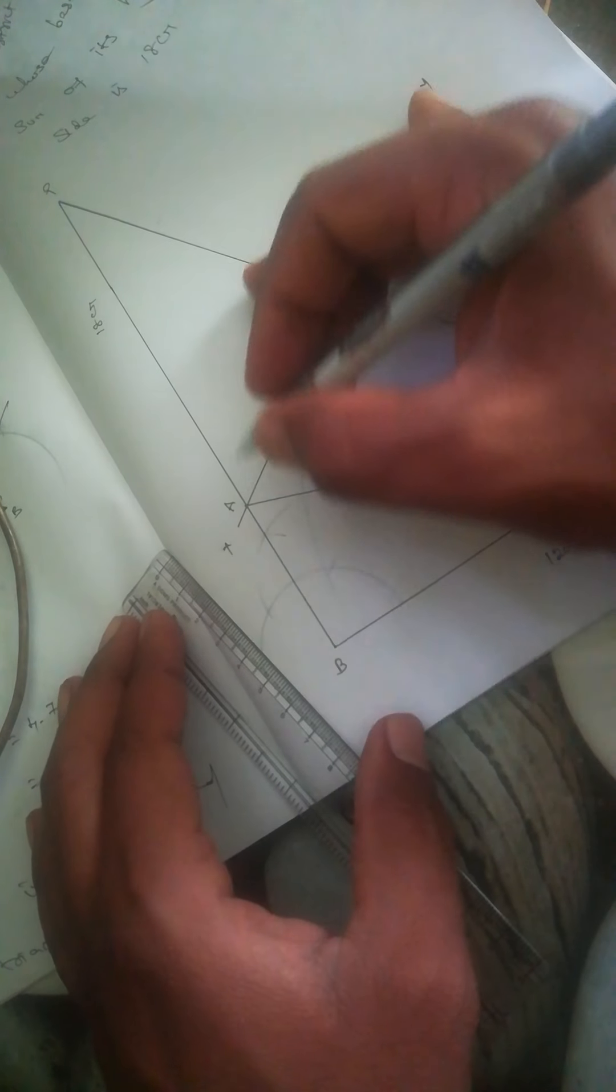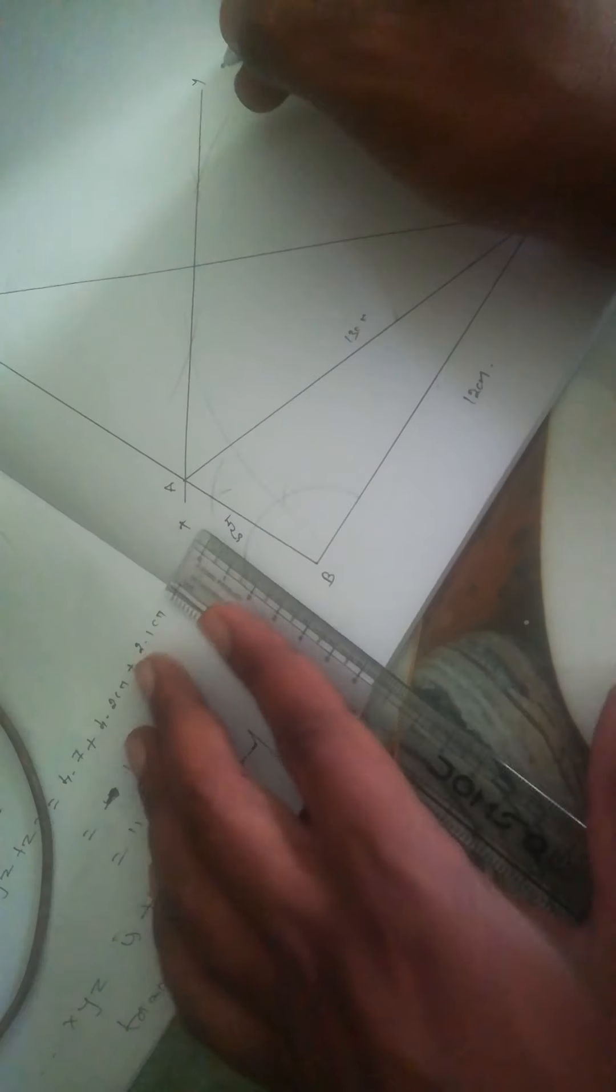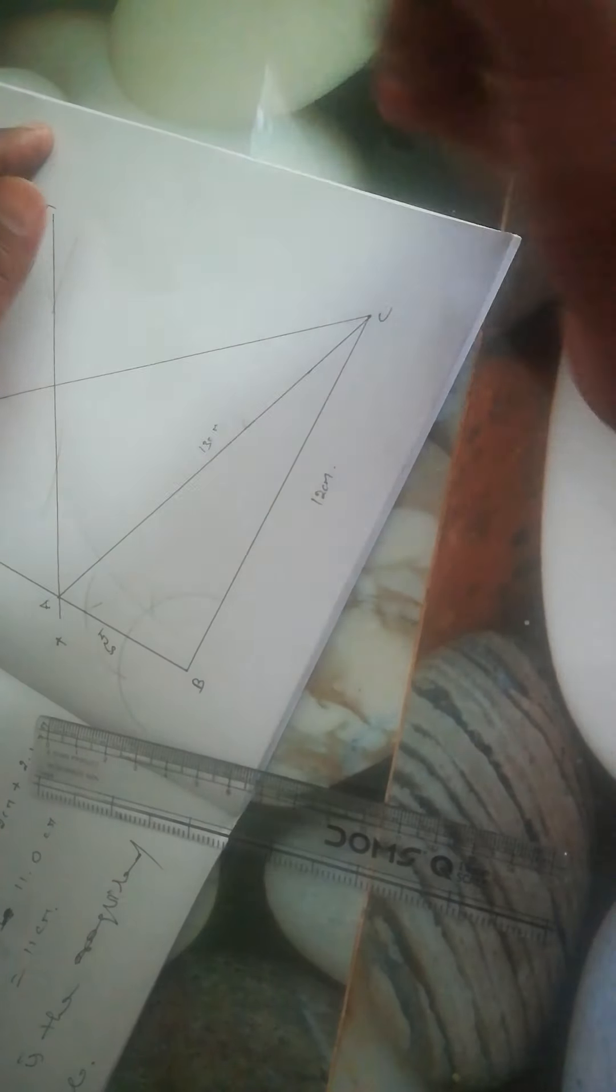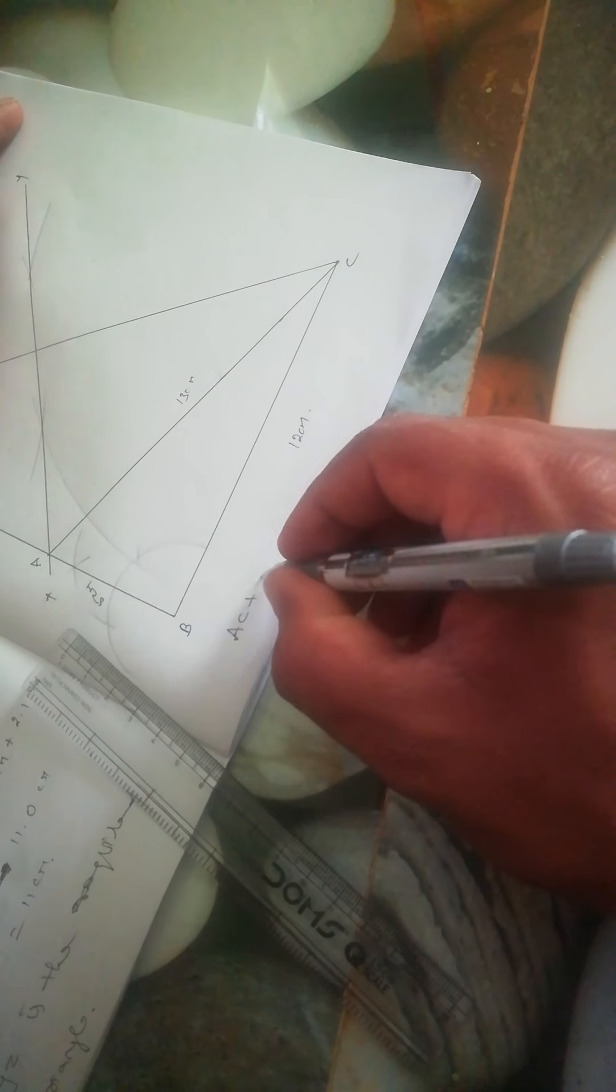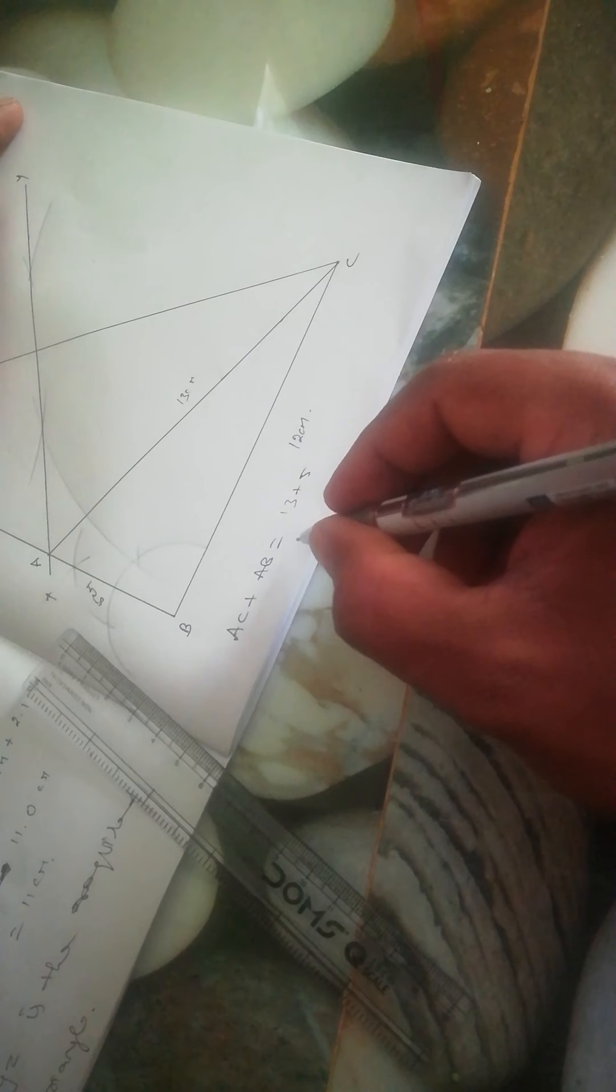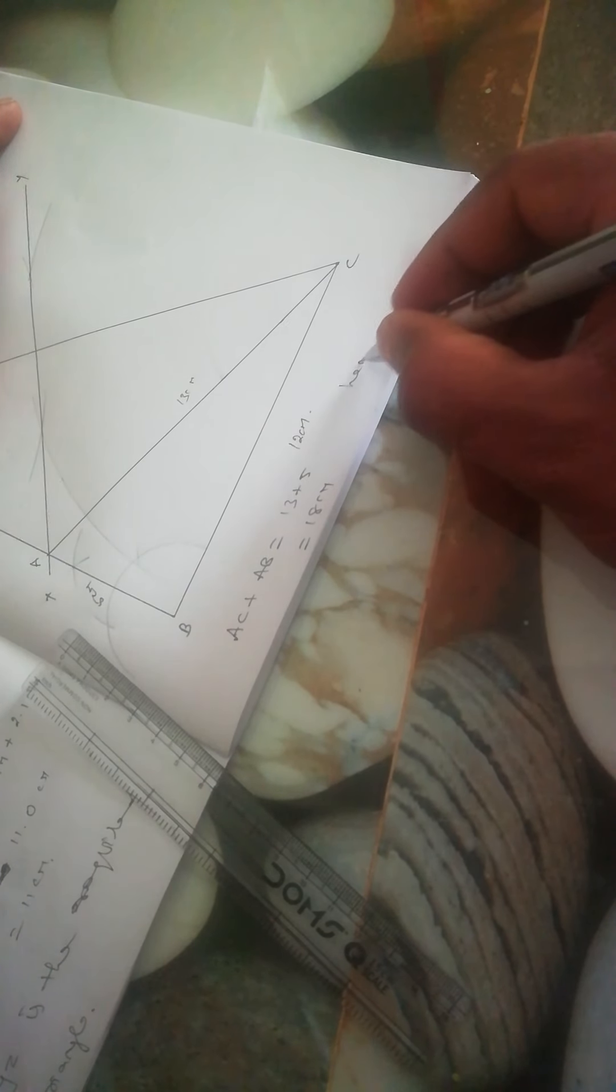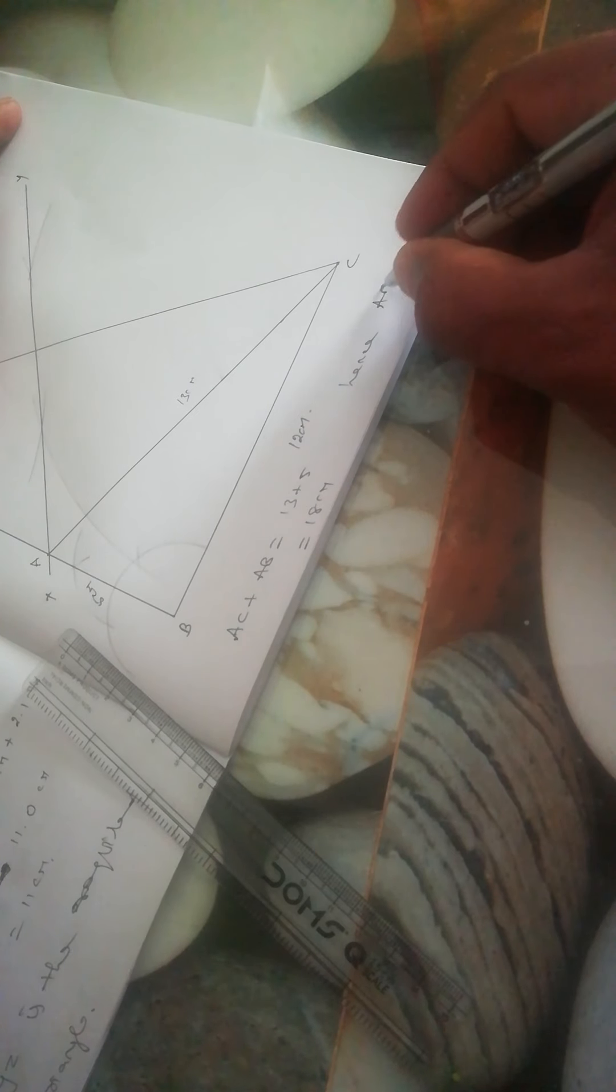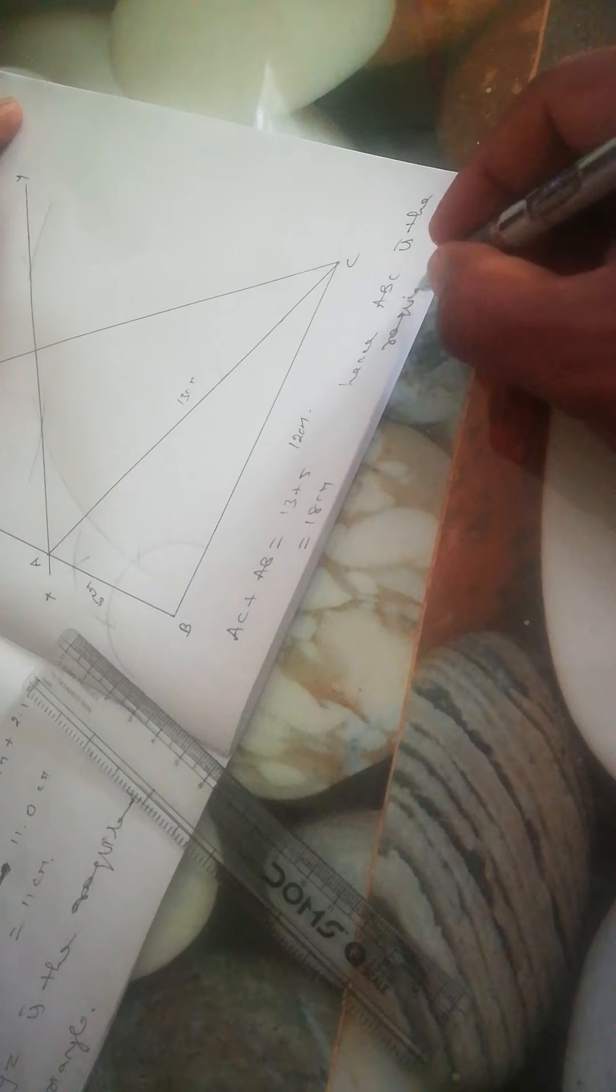Therefore, AC plus AB equals 13 plus 5, which equals 18 centimeters. Hence, ABC is the required triangle.